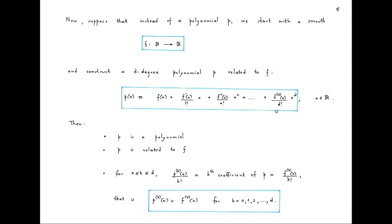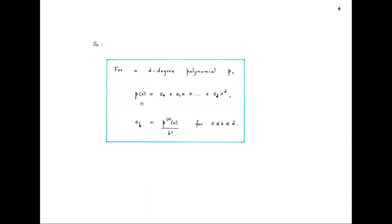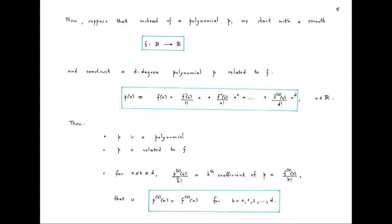First of all, p is a polynomial of degree at most d, and this p is related to f — the coefficients of p are obtained from the successive derivatives of f at 0. Since p is a polynomial, its coefficients are related to its successive derivatives at 0 in the same manner. For this particular polynomial, the kth derivative of p at 0 divided by k! must equal its kth coefficient, which is nothing but the kth derivative of f at 0 divided by k!, for all k between 0 and d. So the k! cancels on both sides, and what we have found is that the kth derivative of p at 0 matches exactly with the kth derivative of f at 0, for all k between 0 and d. So this p matches very well with f.